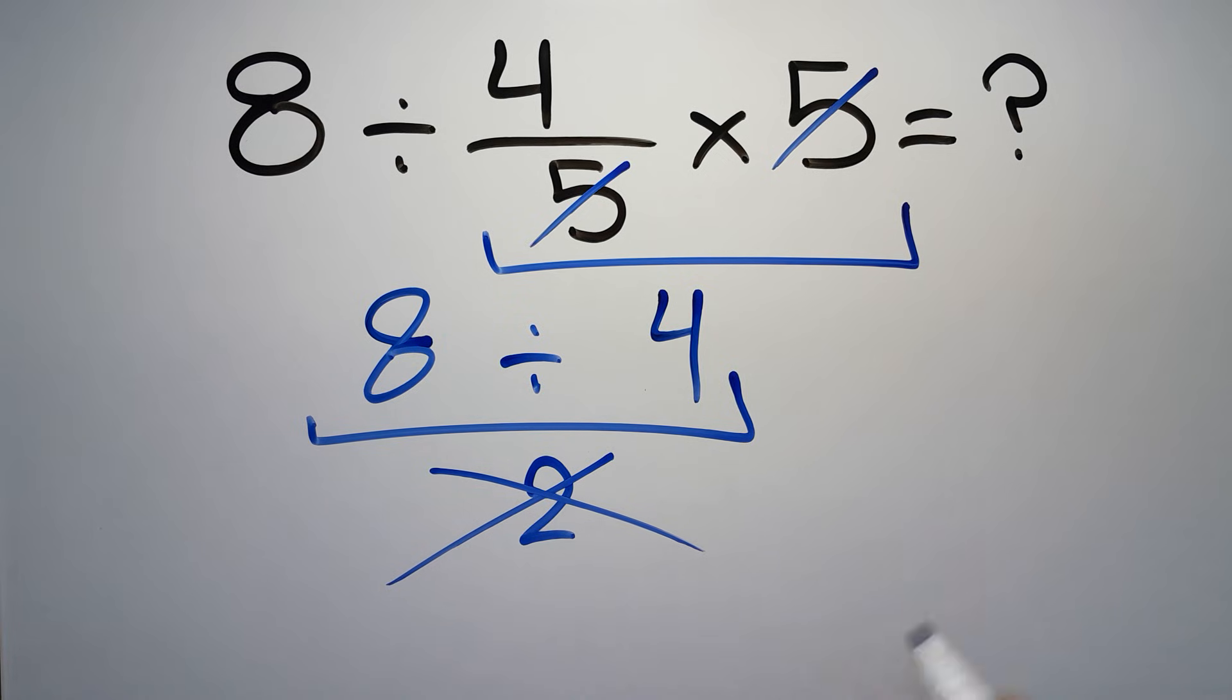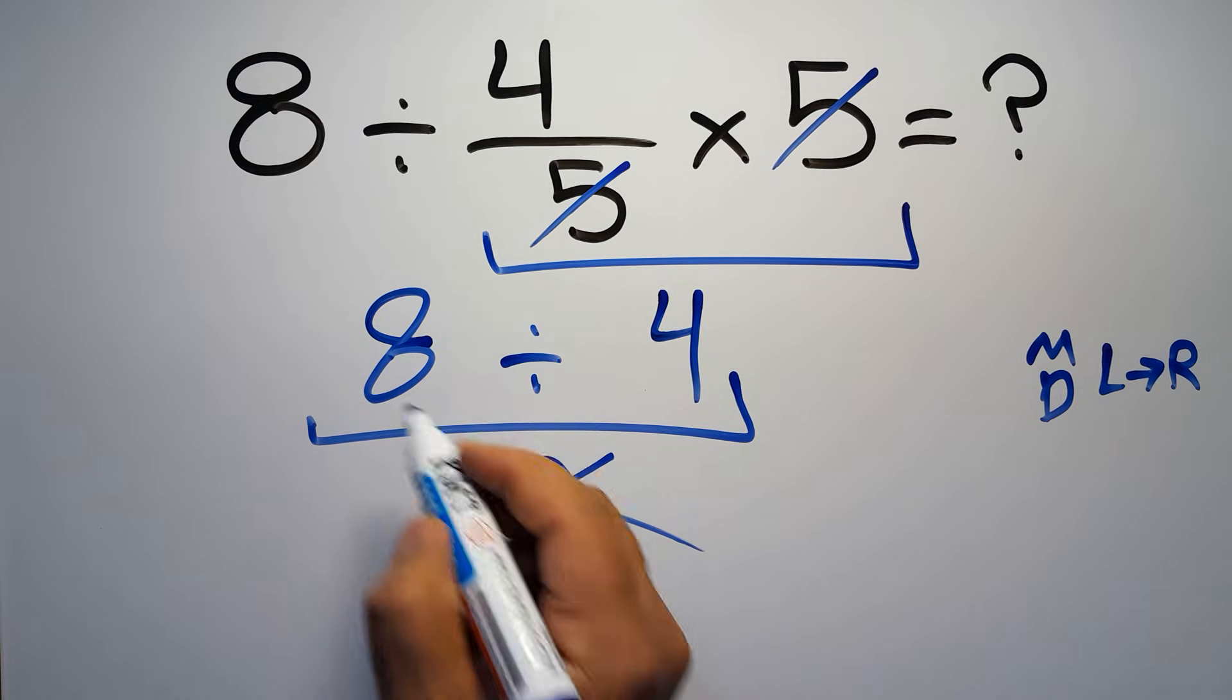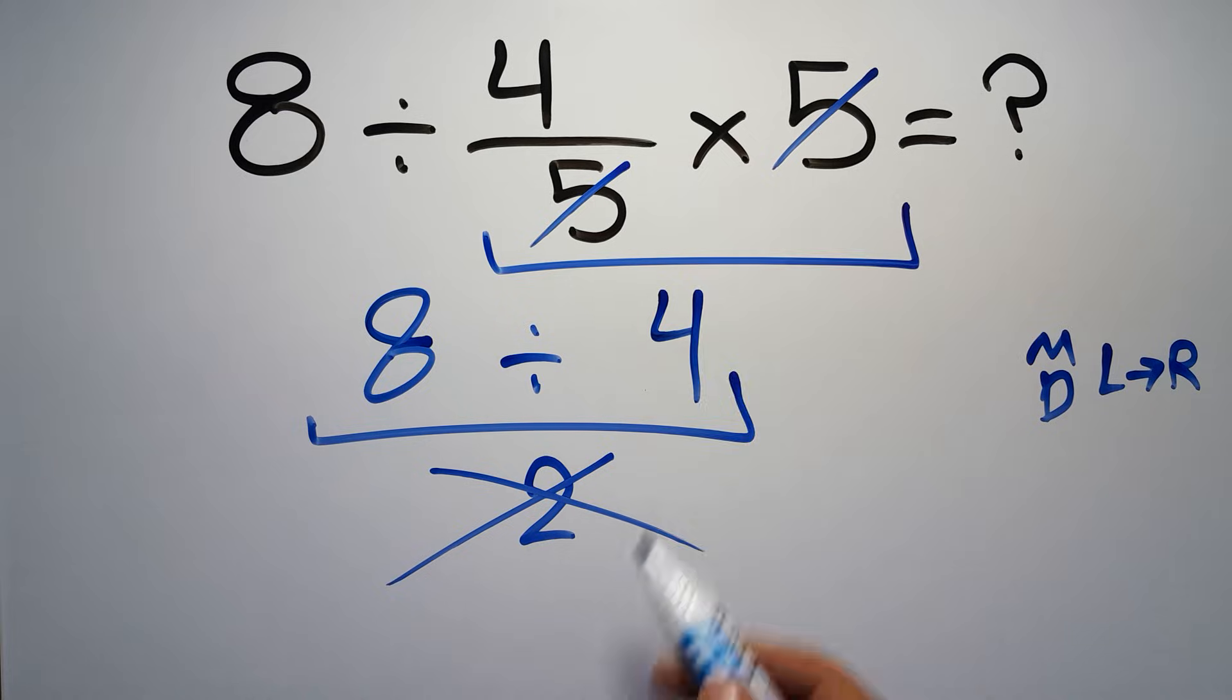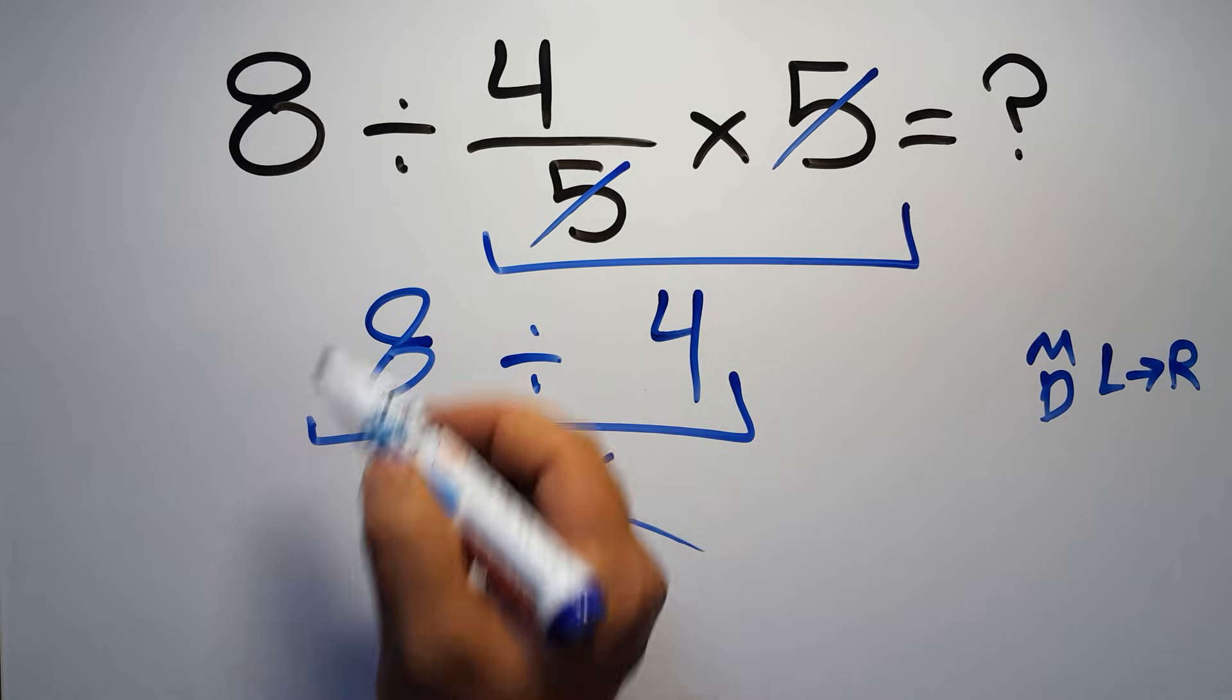According to the order of operations, multiplication and division have equal priority, and we have to work from left to right. So here first we have to do this division, then this multiplication. If we do this multiplication before this division, it is wrong.